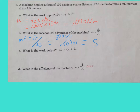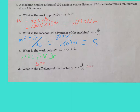Moving on, the next question is: what is the work output? Work output equals our resistant force times our resistant distance. Our resistant force is 500 newtons and our resistant distance is 1.5 meters, so we have 750 newton meters as our work output.